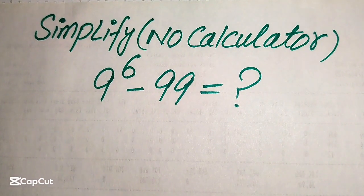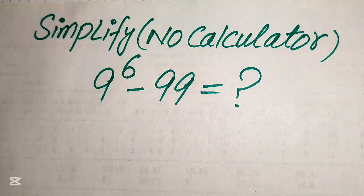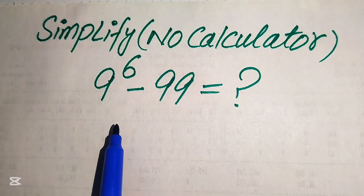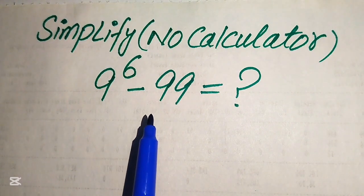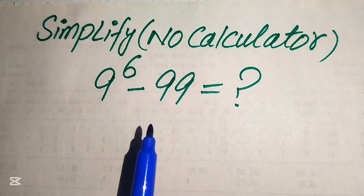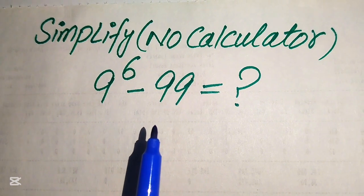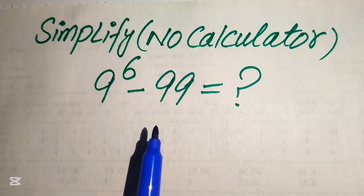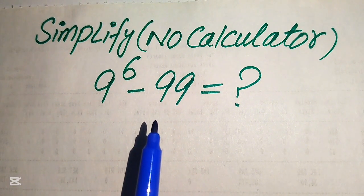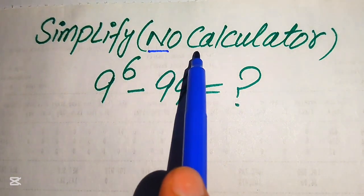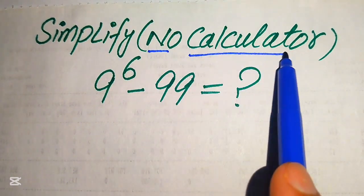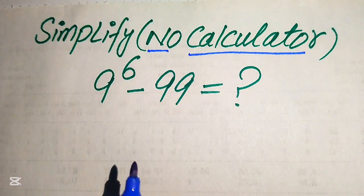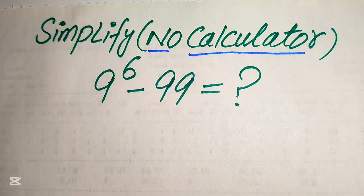Hello everyone, welcome to this nice math algebra problem. Here we have 9 to the power of 6 minus 99, and we will write this algebraic expression into simplified form. Remember, a calculator is not allowed in this problem, which means we need to show all of the working on paper.